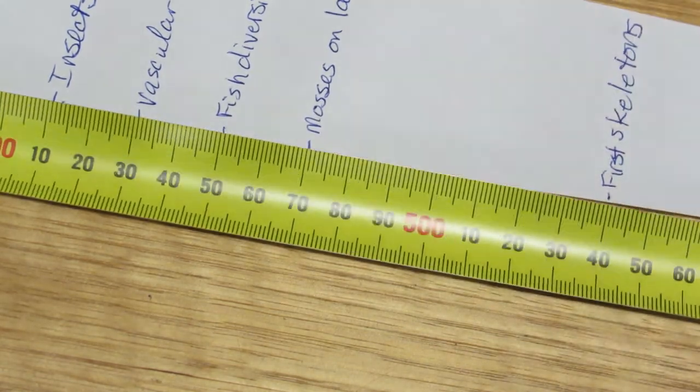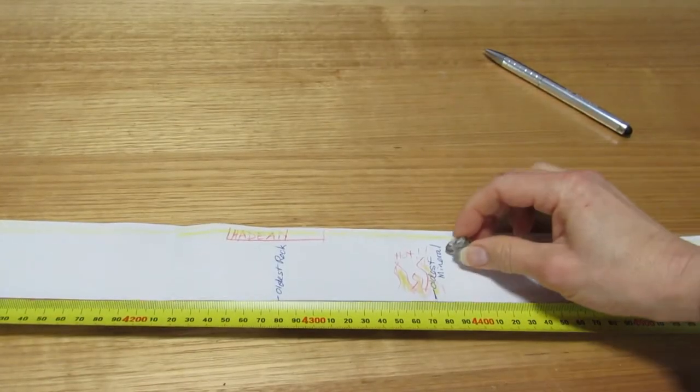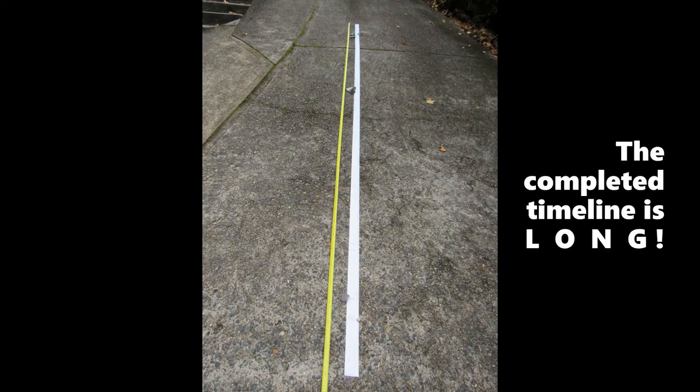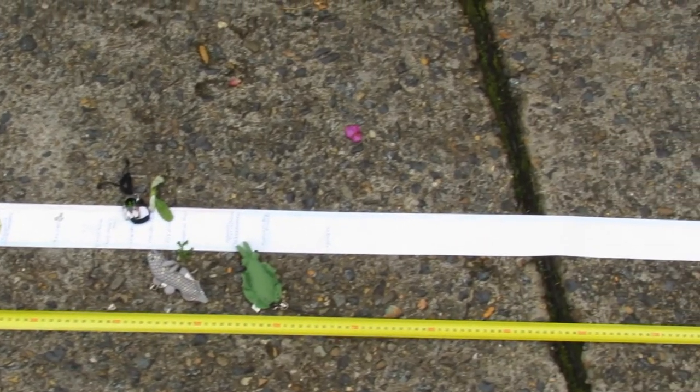Color your time scale to help differentiate between the eons and the modern eras. Use decorations to mark events. When you finish, lay out the time scale. You may need to go outside. I used my driveway for the final display.